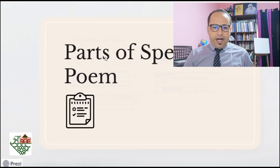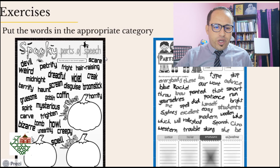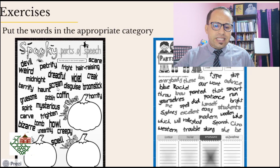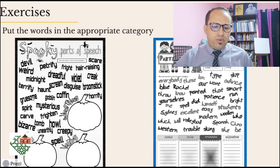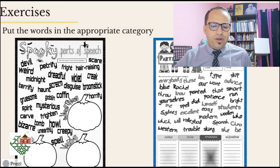I have two worksheets for you. In the first worksheet, words are randomly placed on the page, and there are three pumpkins representing three parts of speech categories: adjectives, verbs, and nouns. All of these words are spooky — they describe scary things. Place them in the correct categories. For example, 'petrify' is a verb; 'dreadful' is an adjective; 'coffin' is a noun, and so on. On the second page, words are randomly put together under different headings: nouns, verbs, pronouns, and adjectives. Place the words under the correct heading — for example, 'patience' is a noun, 'woolen' is an adjective, etc.